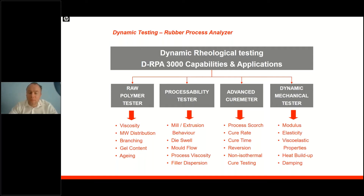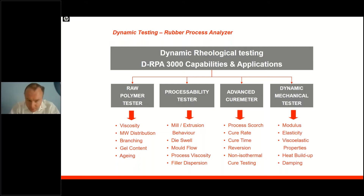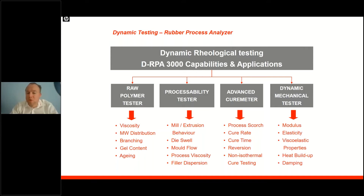The first segment is assessing raw polymer properties such as viscosity, molecular weight distribution, branching of polymers, gel content, and polymer aging properties. Furthermore, RPAs have been used to check processability and simulate production processes such as milling and extrusion, correlating to mold flow, die swell, process viscosities, and dispersion.